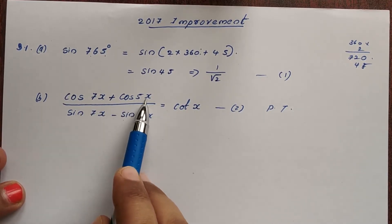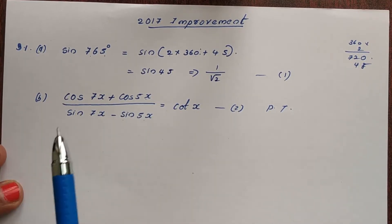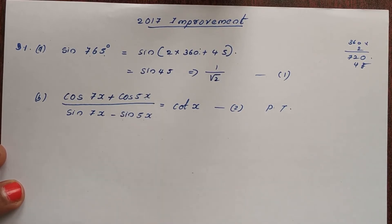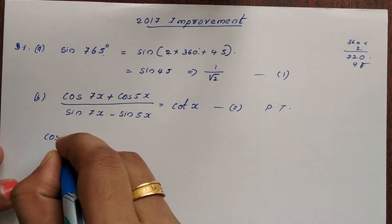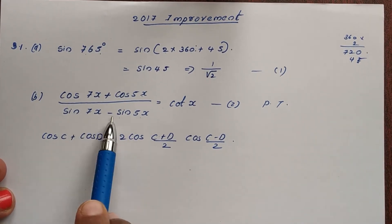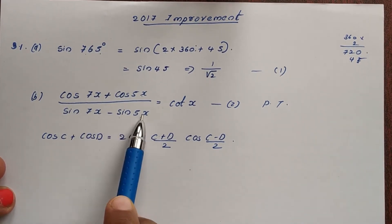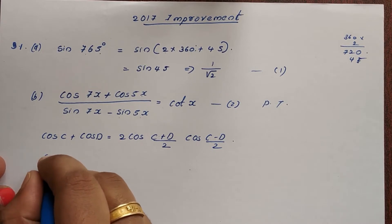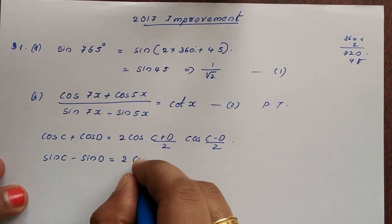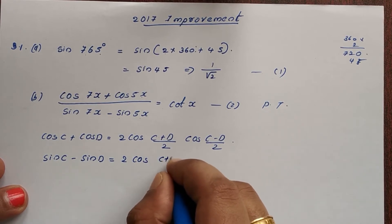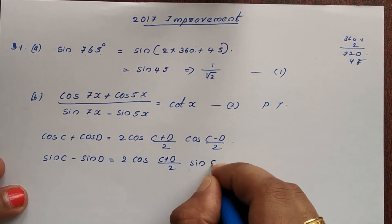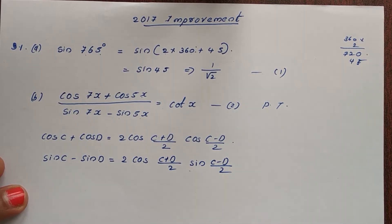The CD formula states: cos C plus cos D equals 2 cos((C+D)/2) into cos((C-D)/2). The denominator formula is: sin C minus sin D equals 2 cos((C+D)/2) into sin((C-D)/2).